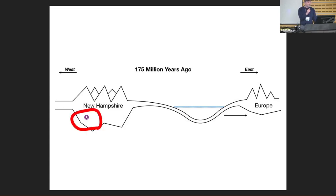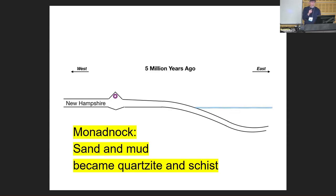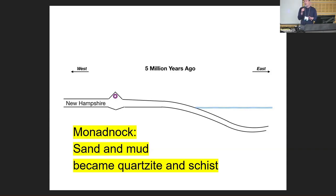Fast forward 170 million years and you get Monadnock — the only thing standing. Where did that whole mountain range go? Erosion — weather, wind, and ice. Metamorphic rock is harder than sedimentary rock. There used to be an ocean here, and that sand and mud became, through all that pressure and heat, quartzite and schist. That's what we're scrambling over when we climb Monadnock: primarily schist and quartzite.